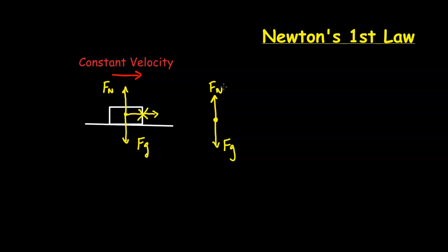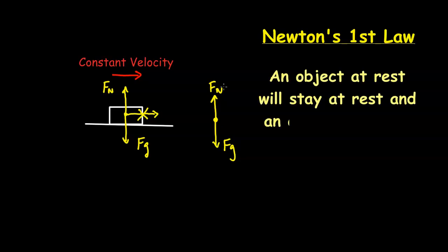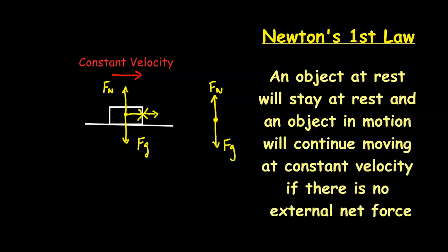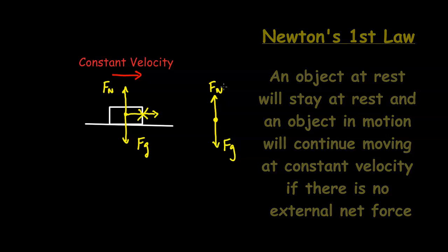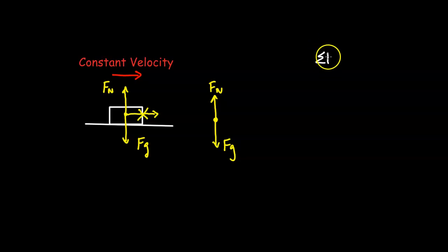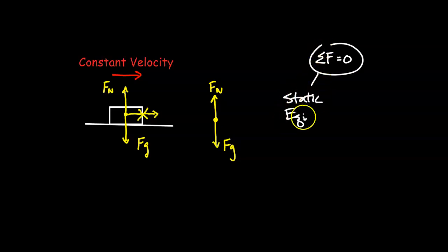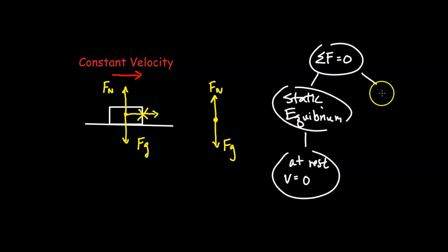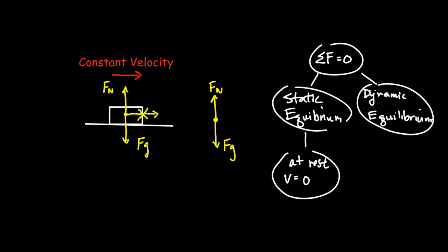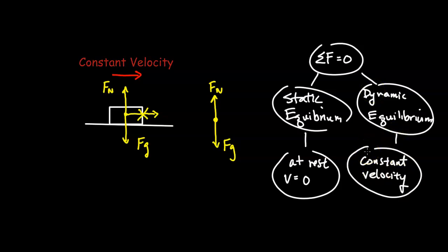This is a good application of Newton's first law, which states that an object at rest will stay at rest, and an object in motion will continue moving at constant velocity if there is no external net force. In this case, it's moving at constant velocity, so we know there is no net force horizontally. If there was a net force horizontally, it would be accelerating. There are two possibilities when the net force equals zero: static equilibrium, when the object is at rest, and dynamic equilibrium, when the object is moving at constant velocity.